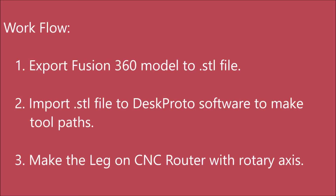One of the key issues is how to transfer the 3D geometry from the design software, which is Fusion 360 in this case, to the CAM software, which in this case is DeskProto. Like many things, it turns out it's very simple if you know how to do it. The .STL file is the key. STL is short for stereolithography. It uses hundreds or thousands of small triangular surfaces to represent an approximation of 3D objects. The first step is saving the 3D object created in Fusion as an STL file. The second step is importing the STL to DeskProto, which is used to make the rotary toolpaths. And the third step is cutting the part on the CNC rotary axis.